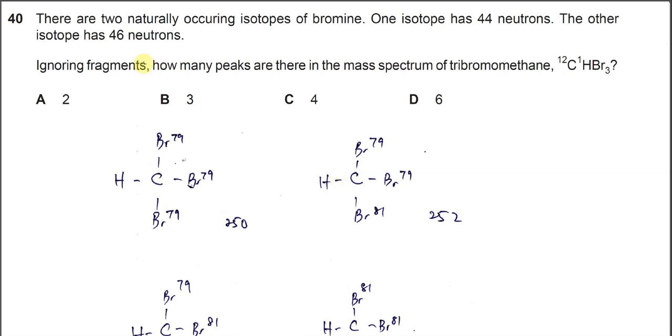Question 40: There are two isotopes with 44 neutrons and 46 neutrons, which means it's a bromine element. So it's bromine-79 and bromine-81. Ignoring the fragmentation or fragments, how many peaks are there in the mass spectrum?